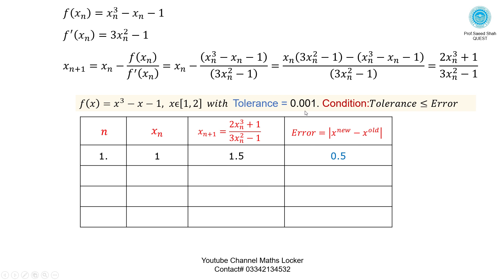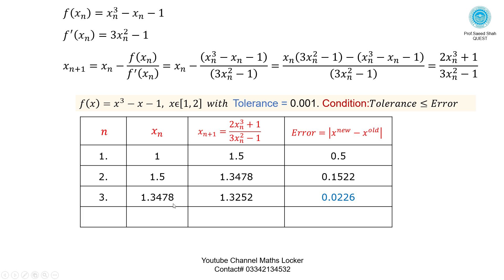Iteration 2: Take xₙ = 1.5, substitute into formula, simplify to get xₙ₊₁. Take the difference for the error, check condition — tolerance still less than error, go to next iteration. Iteration 3: Take the new xₙ₊₁ as xₙ, substitute, simplify, compute error, check condition — still not met, go to next iteration.